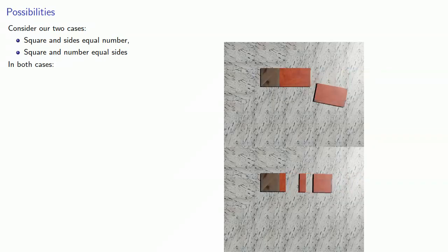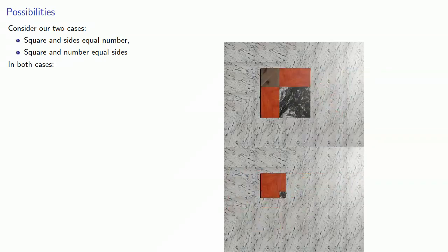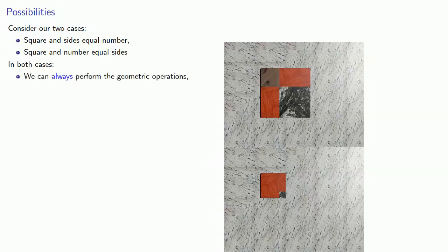Now let's take a breather and consider our two cases: square and sides equal number, and square and number equal sides. In both cases, if we go through the geometric constructions, it should be clear that we can always perform the geometric operations, and that means we will always get a non-negative side length.